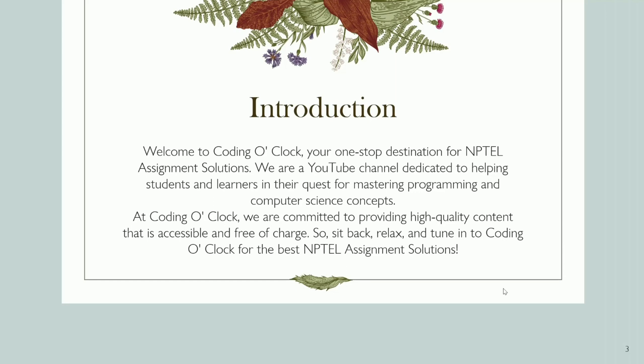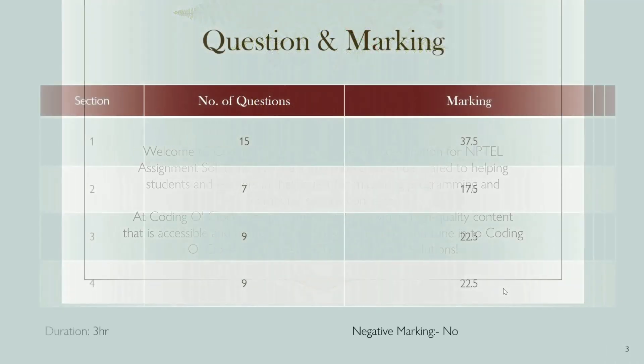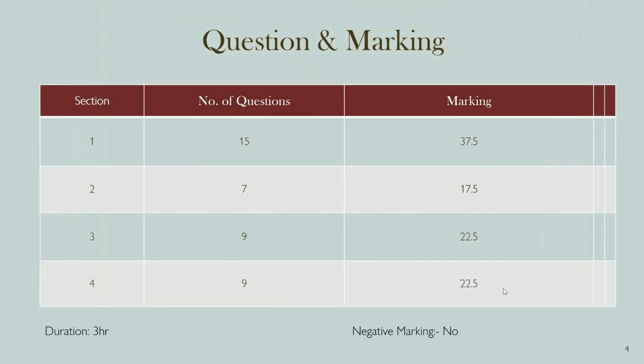Now let's talk about the exam pattern and how the questions are divided across different sections. The exam consists of four sections, each with a different number of questions and marks. Section 1 has 15 questions, each carrying 2.5 marks, for a total of 37.5 marks. Section 2 has 7 questions, each carrying 2.5 marks, for a total of 17.5 marks.